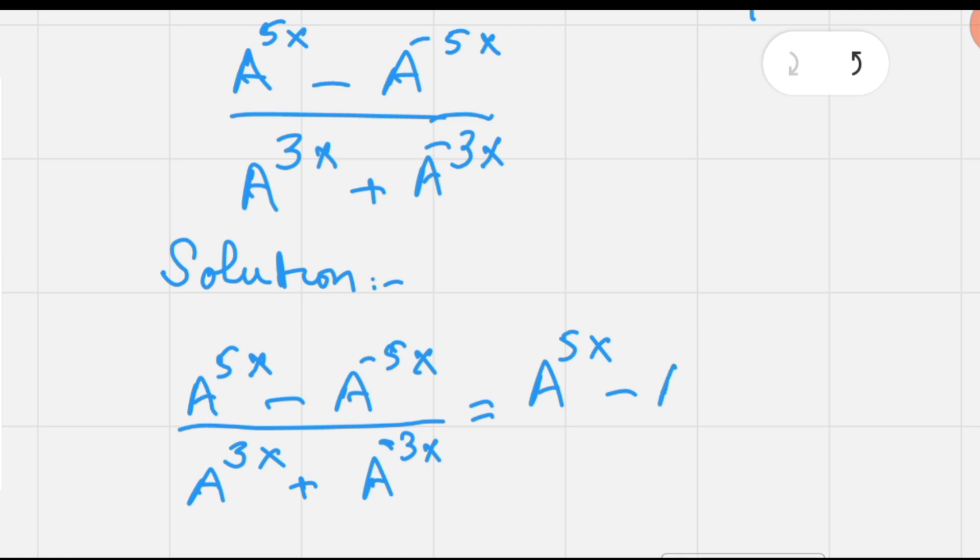Looking at the feasibility, we see that these powers can be made even multiples of 2 by multiplying this fraction by A^(5x) and dividing as well.